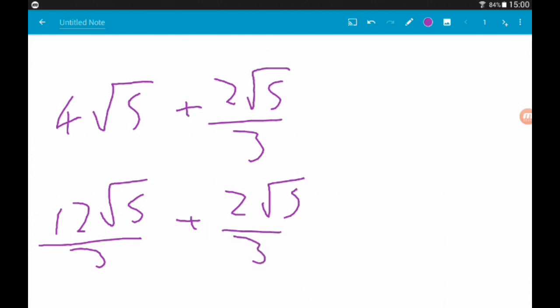So, we've got 12 thirds root 5 add 2 thirds root 5. So, 12 thirds add 2 thirds is 14 thirds. So, our answer is 14 root 5 over 3. 14 thirds root 5.